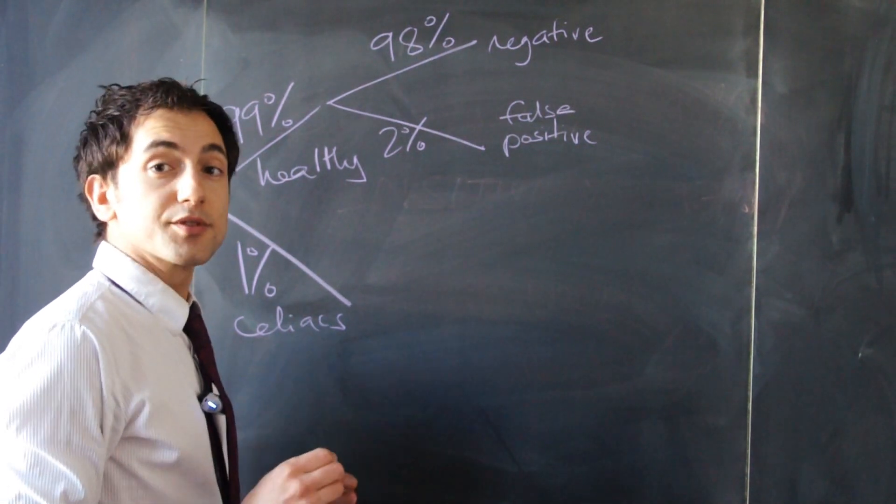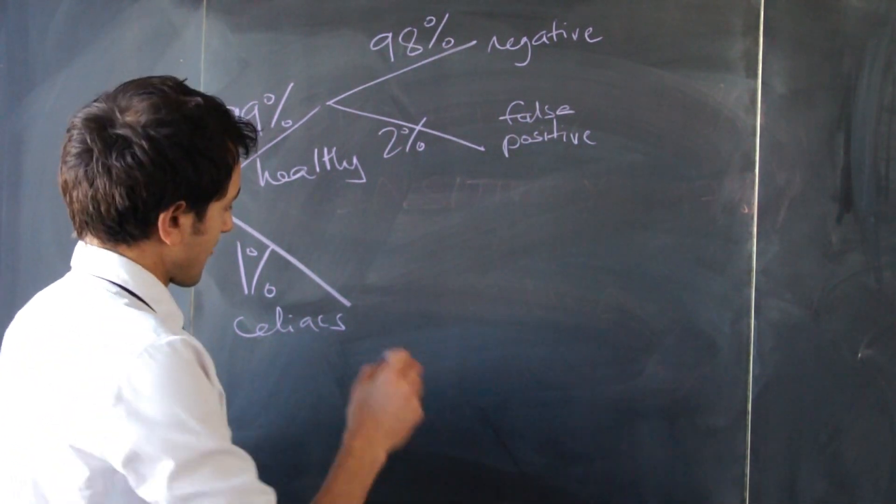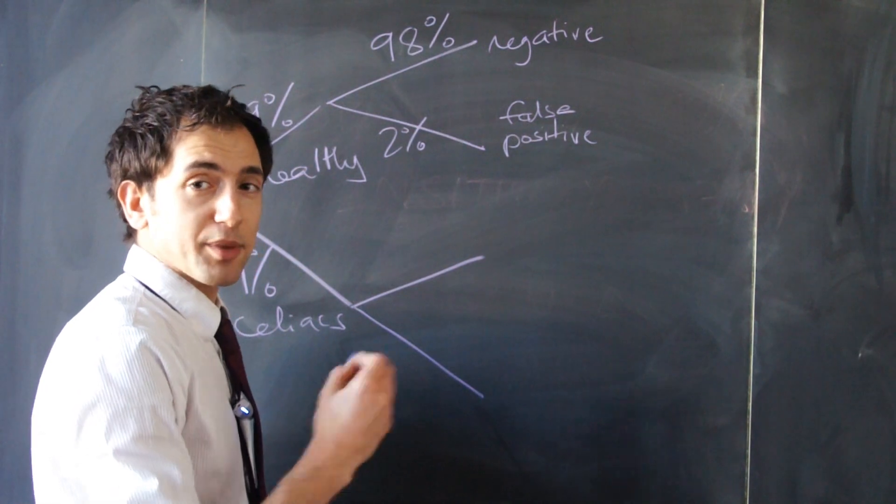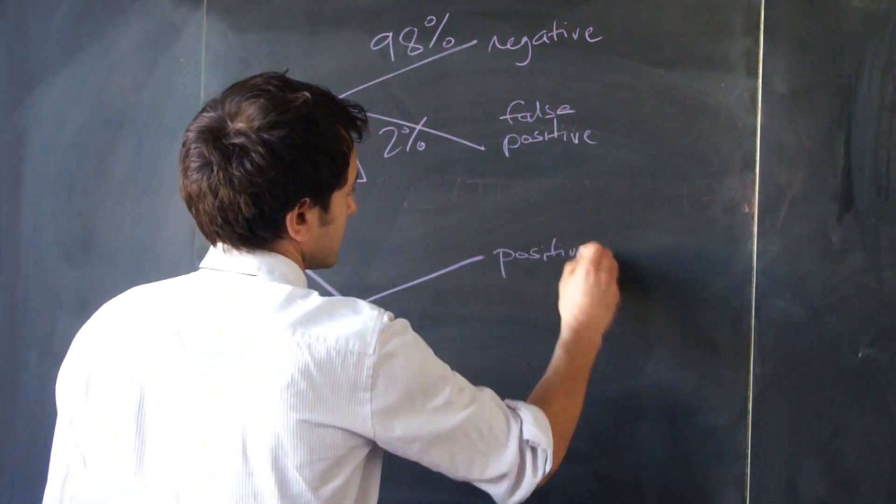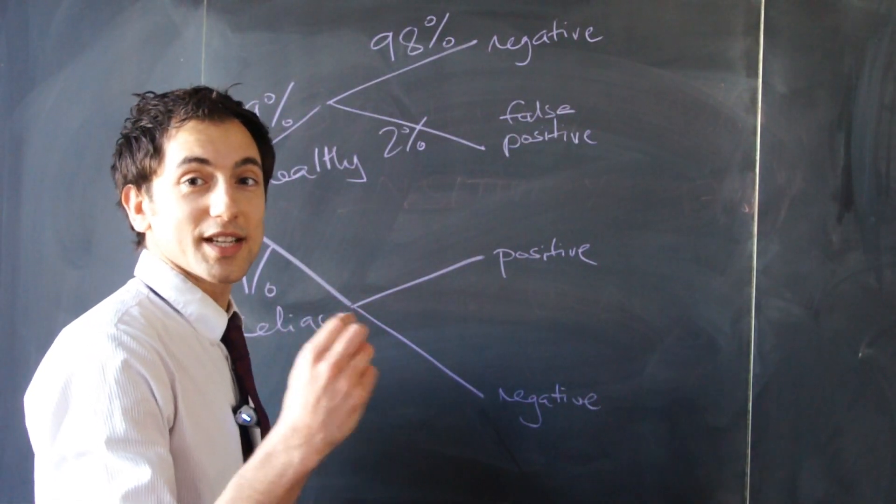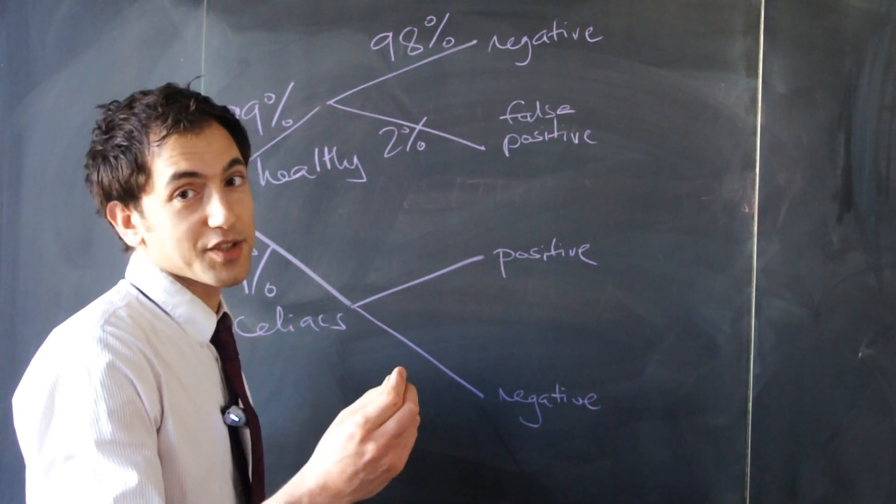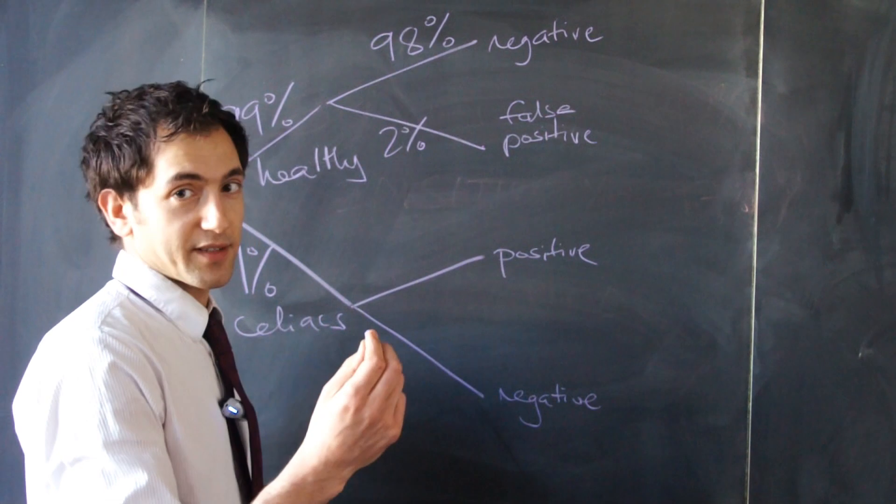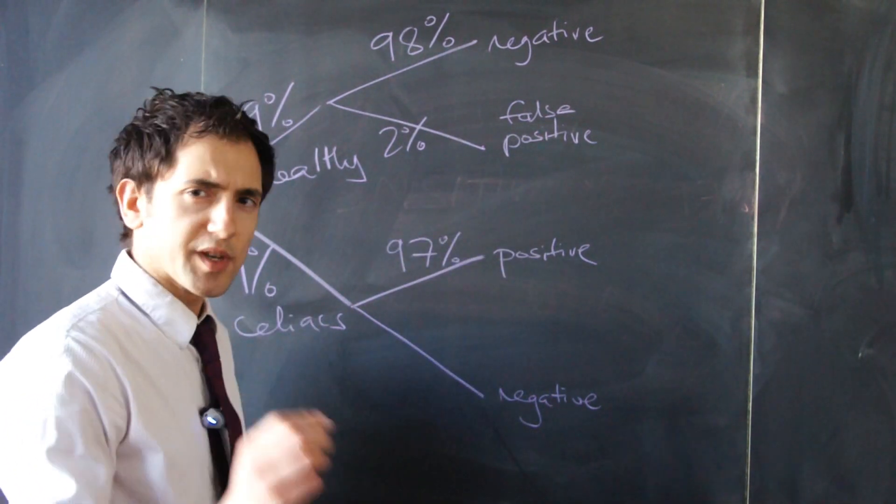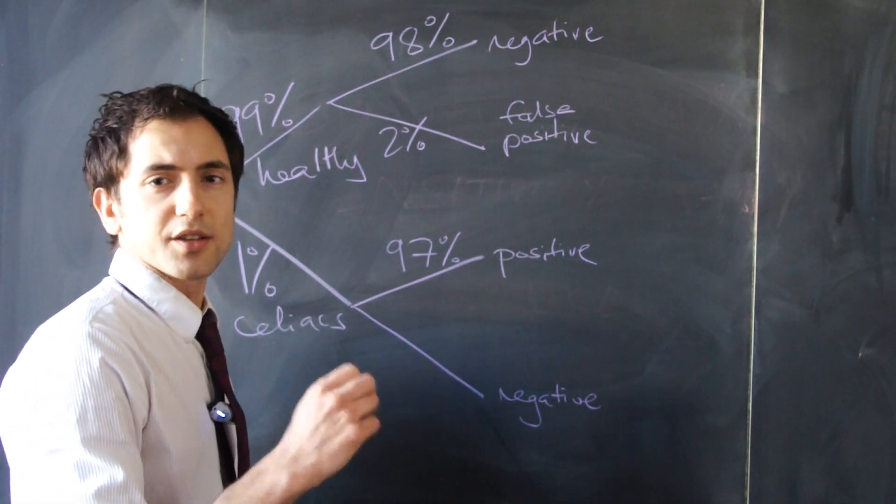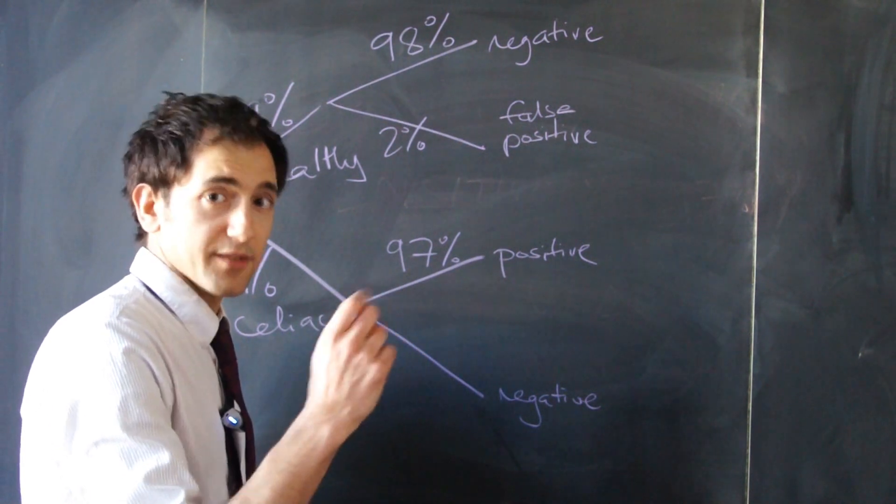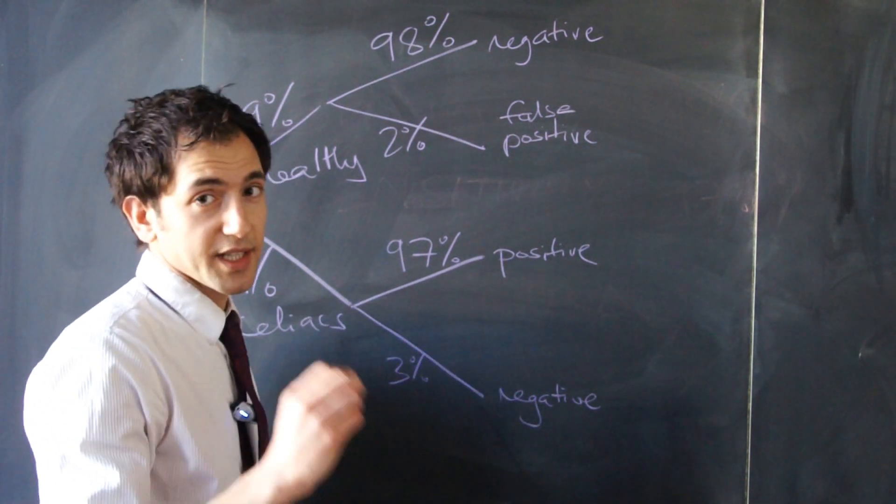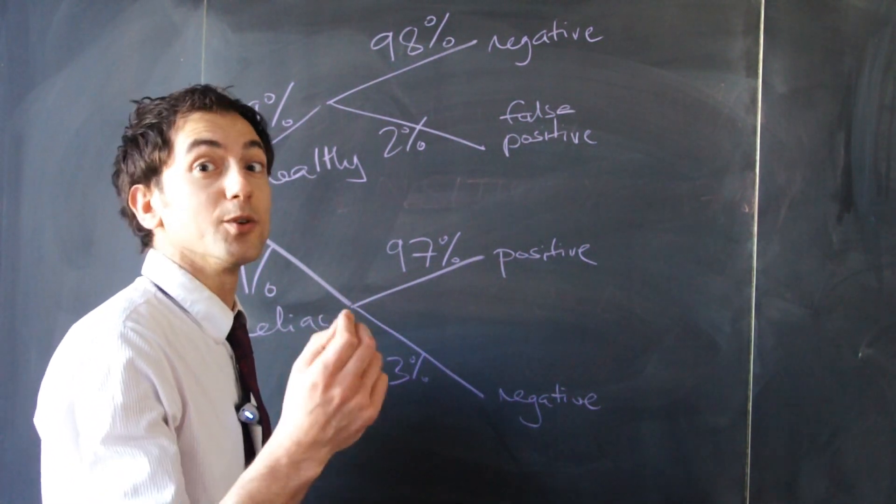Let's now look at the people who do have the disease, the celiacs. Again, the test can come up positive or negative. In this situation, the test correctly identifies the diseased individuals 97% of the time—the sensitivity of the test. Just 3% of the time, it says those individuals don't have the disease even though they do. Because that's an incorrect conclusion, we call it a false negative.